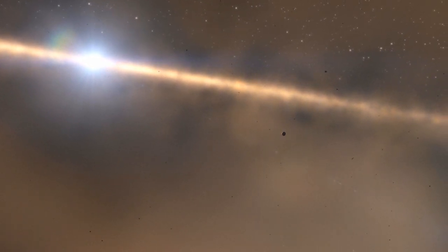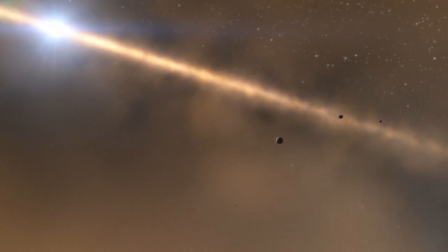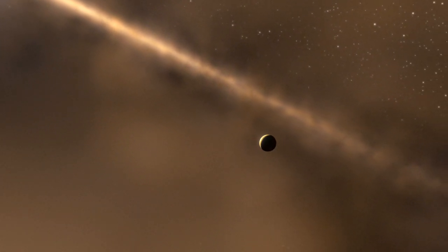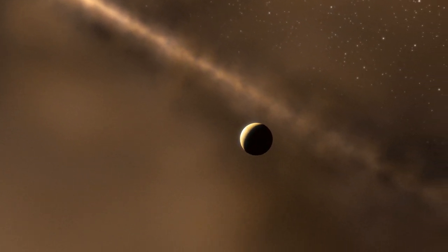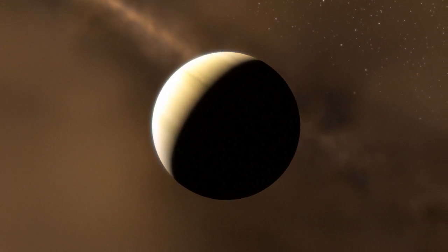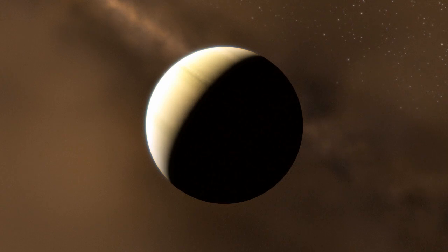The planet has the smallest orbit of all directly imaged exoplanets so far, lying as close to its host star as Saturn is to the Sun. This discovery proves that gas giant planets can form in only a few million years, a short time in cosmic terms.